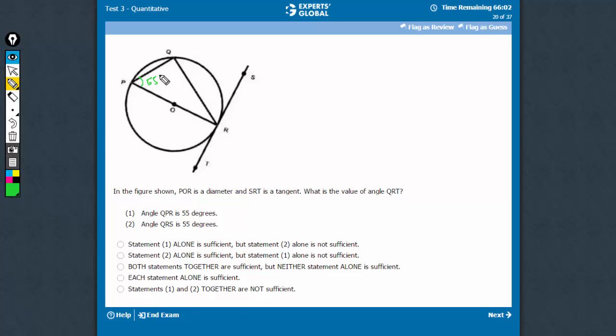This is a triangle in the diameter, so this has to be 90 degrees. So 90, 55, 145, so this becomes 35.